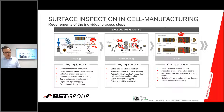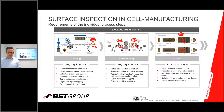The key requirements are very similar. For coating, we need defect detection top to bottom, inspection of lane and pattern coating, validation of edge strength, geometric measurements of coating, top-to-bottom coating alignment, and digital report flagging devices for defect traceability — what we call workflow. The last two items are a must in this industry, to trace defects and remove them latest in the assembly process — for example, taking out monocells which are not okay. For slitting, we also need geometric measurements to verify that the knife position aligns with the edge position of the coating.